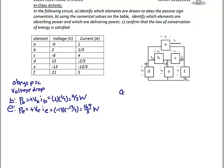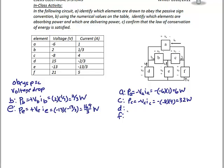For elements that did not obey the passive sign convention — A, C, D, and F — we use a negative sign. PA equals negative VA times IA, or negative negative 6 times 1, which is positive 6 watts. PC equals negative VC times IC, which is negative 8 times 4, giving positive 32 watts. PD equals negative VD times ID, which is negative 15 times negative 2/3, giving positive 10 watts. PF equals negative VF times IF, which is negative 21 times 5, giving negative 105 watts.